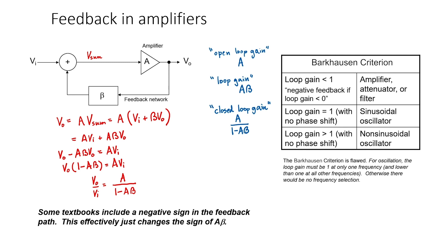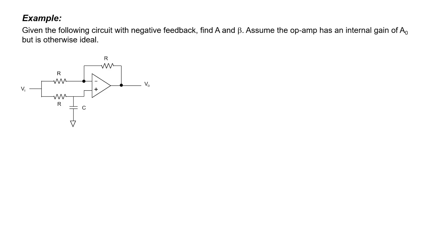It's not enough merely to have a loop gain equal to 1. Let's now look at an example where negative feedback has been used in a circuit. Given this particular circuit, let's find A and beta and redraw the circuit into the particular reference format that we discussed.